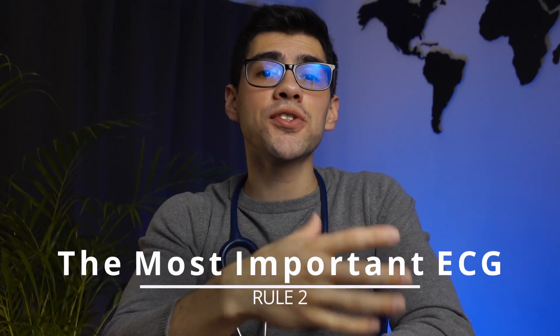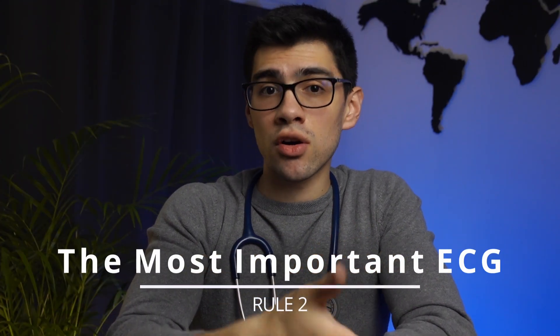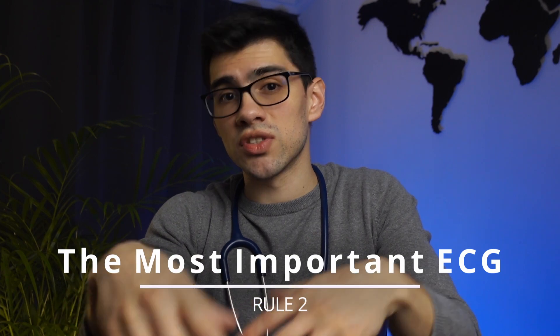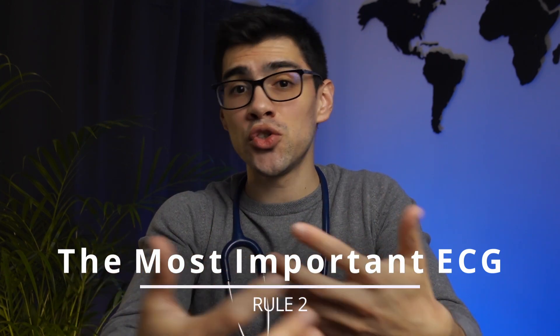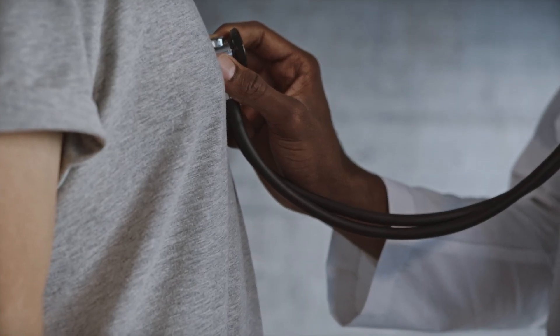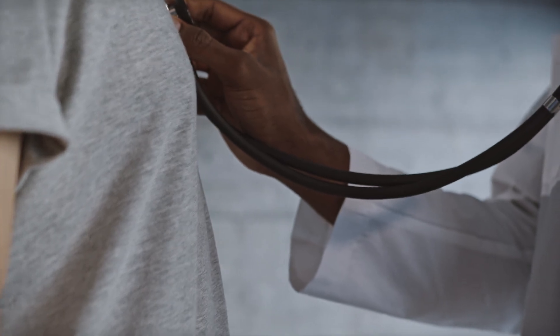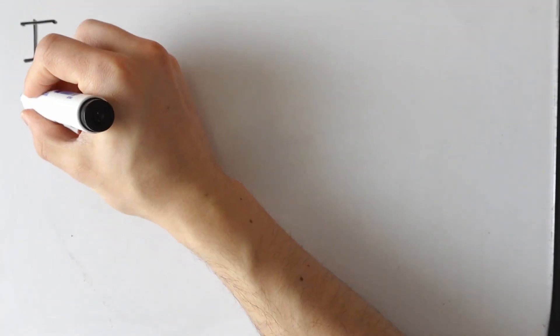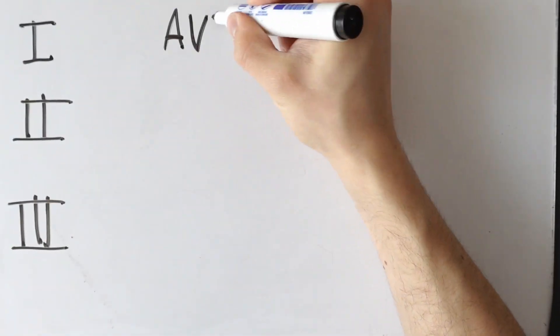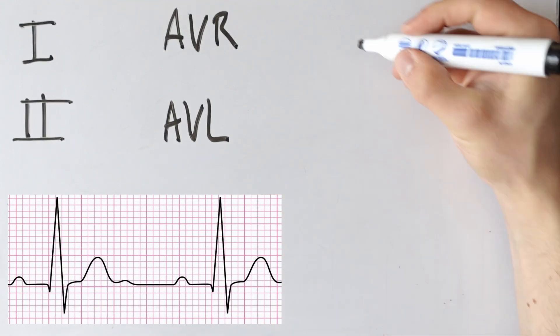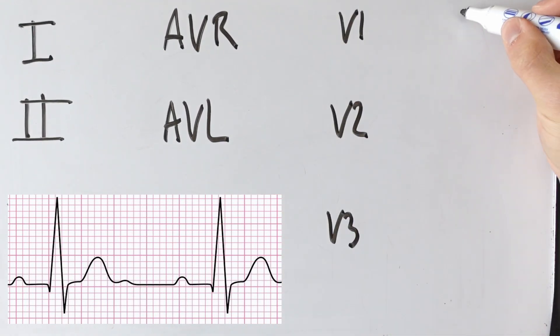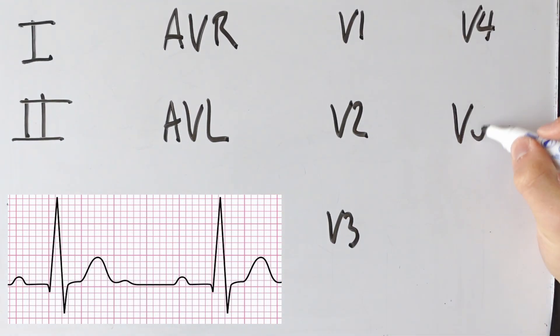The second rule of thumb is to first learn the normal EKG by heart. The most important EKG you should know is the normal EKG. Everybody thinks they know it, but that's not usually the case. To test yourself, grab a blank piece of paper and draw the normal appearance of all the waves in each lead. If you end up drawing the same thing in every single lead, it means you really don't know the normal EKG well enough.